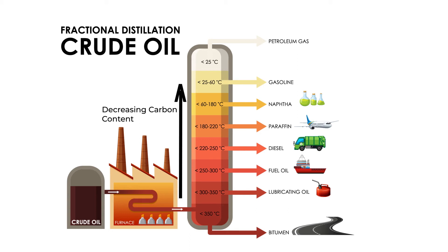Naphtha is used in making petrochemicals. These chemicals are used in the manufacturing of plastics, medicines, furniture, appliances, solar panels, PVC pipes, etc. Petrol is used in light vehicles such as bikes and cars. Petroleum gas or LPG is widely used in households for cooking.